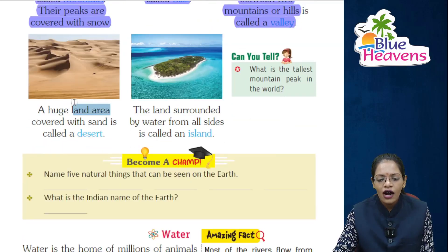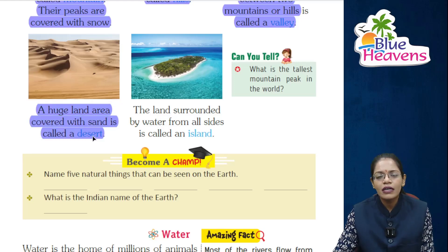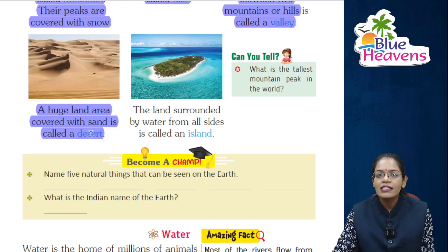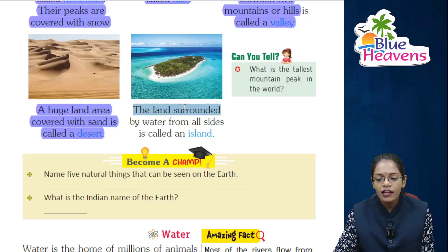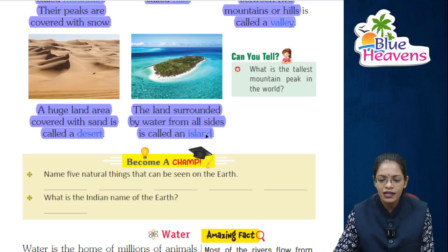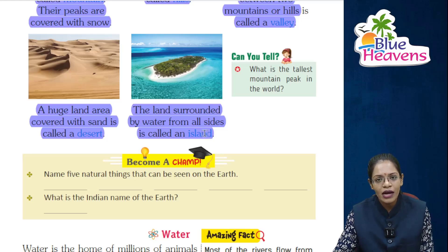Next is desert. A huge land area covered with sand is called a desert. Next is island. The land surrounded by water from all sides is called an island.